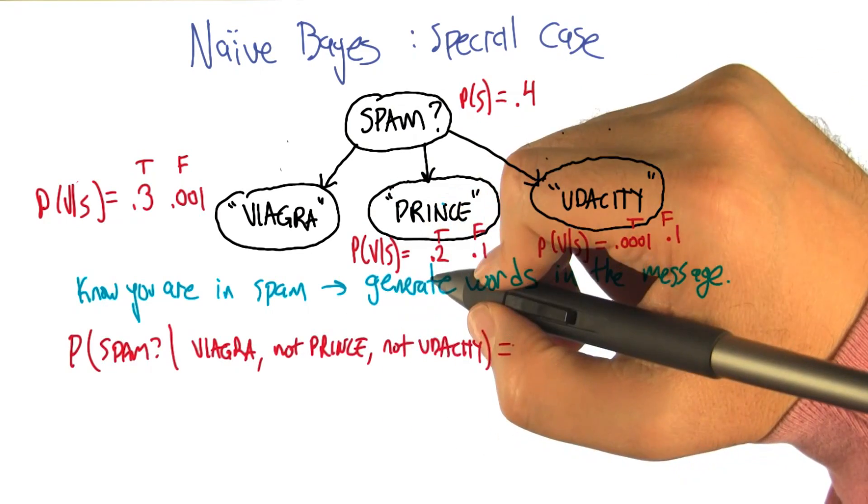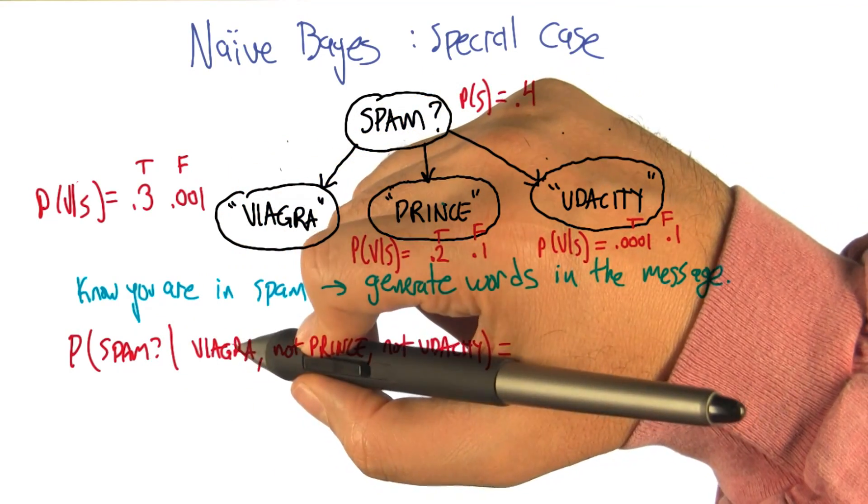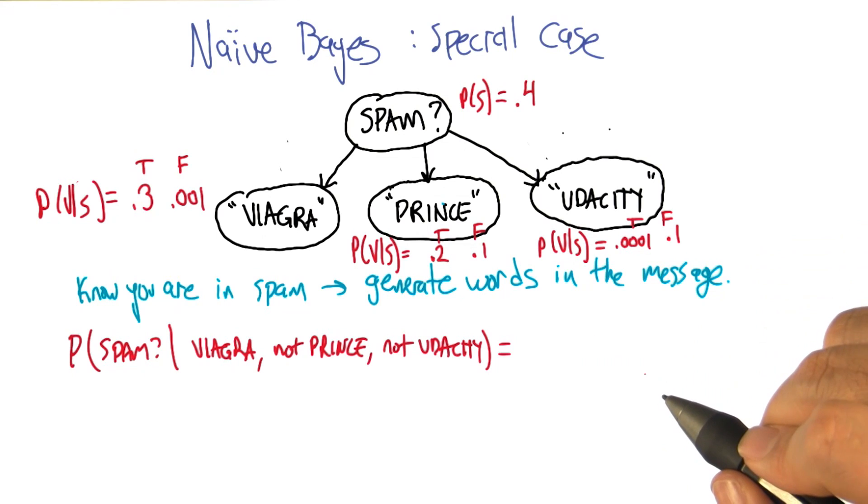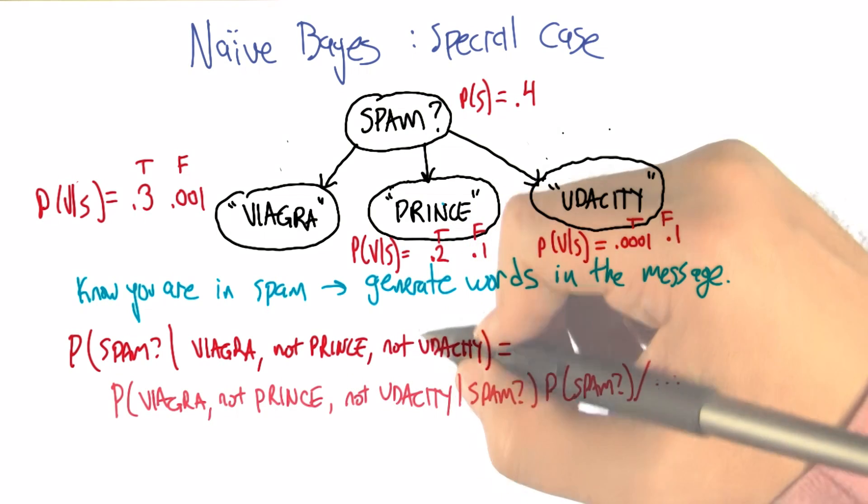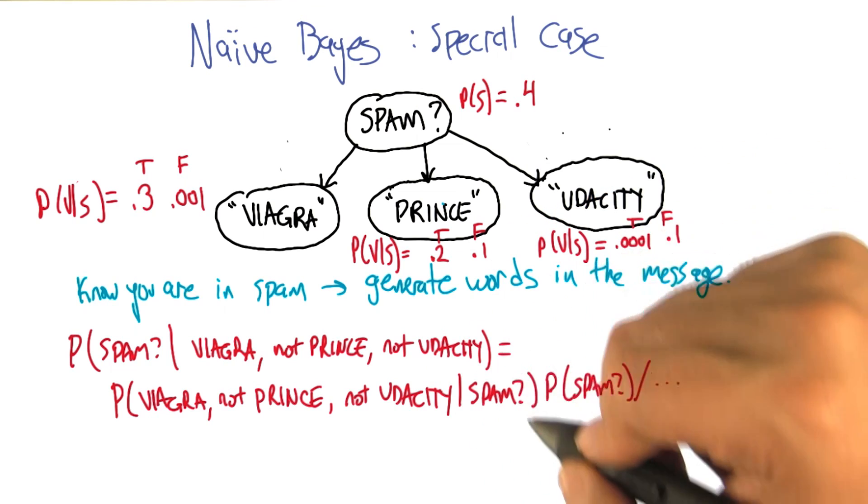So we should be able to answer questions like, what's the probability that a given message is spam, given that the message has Viagra in it, but not prince or Udacity? So how would we work this out? Well, since it says naive Bayes, I think I'd use Bayes rule. That would be naive of you. All right, so now we've applied Bayes rule, we've flipped things around, and why is this giving us an advantage?